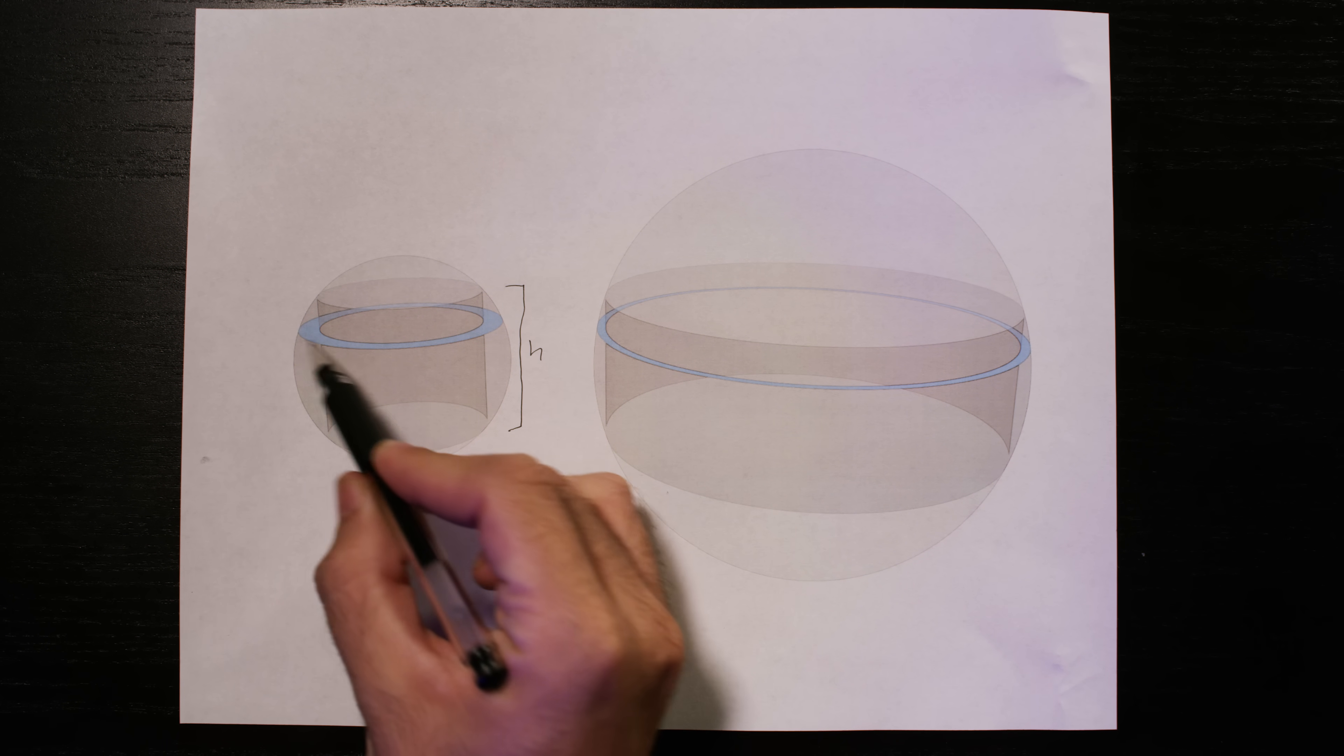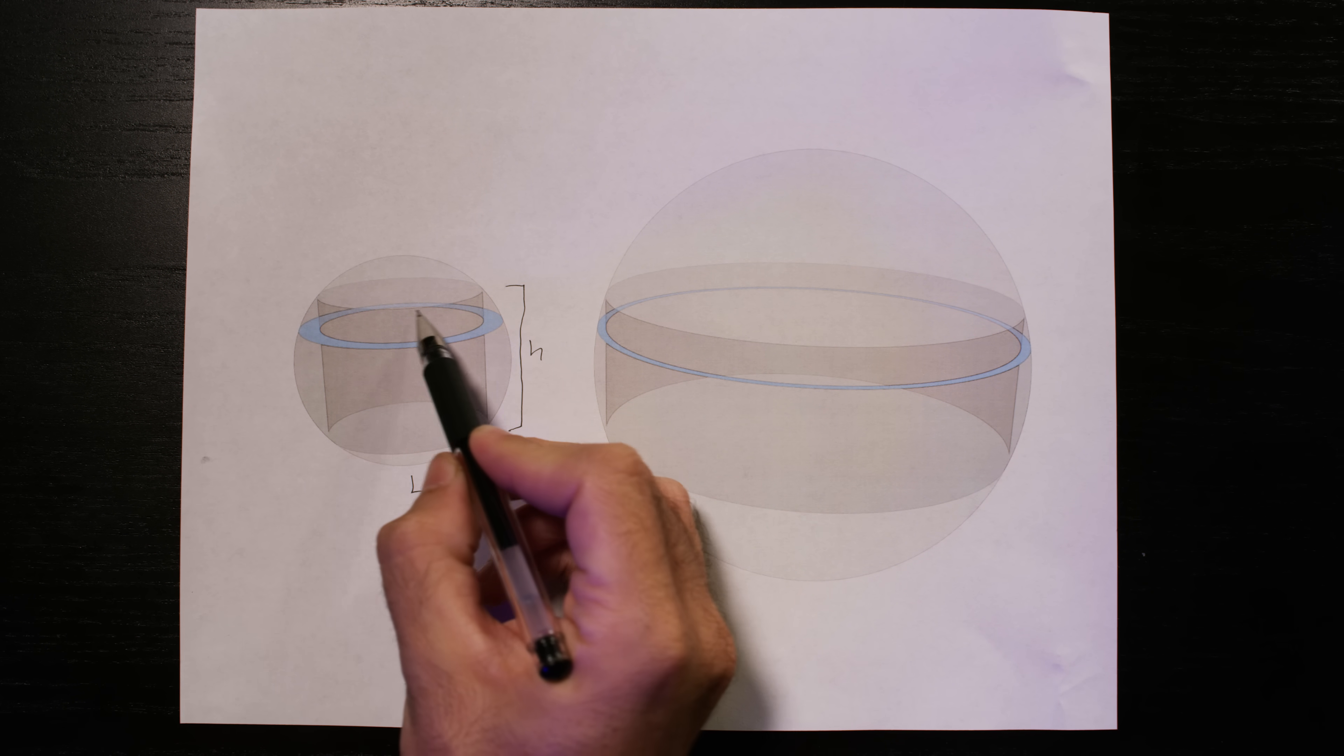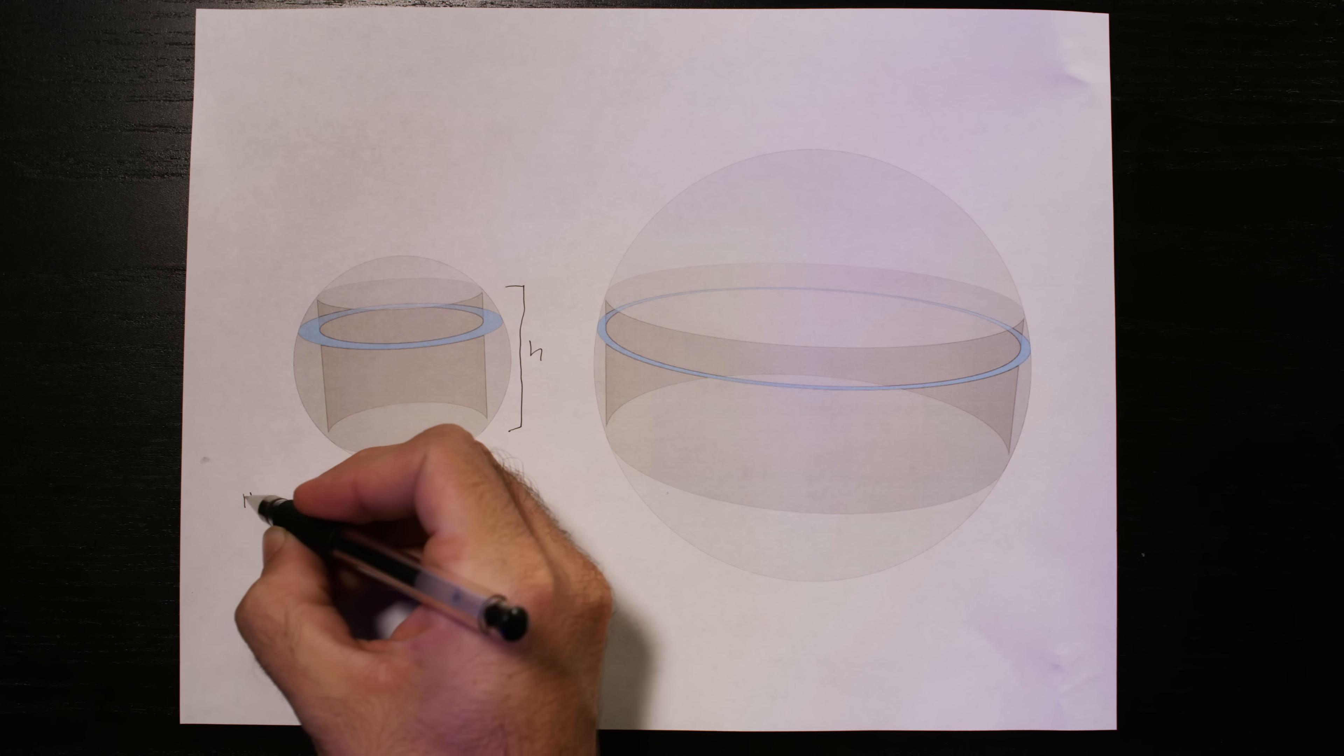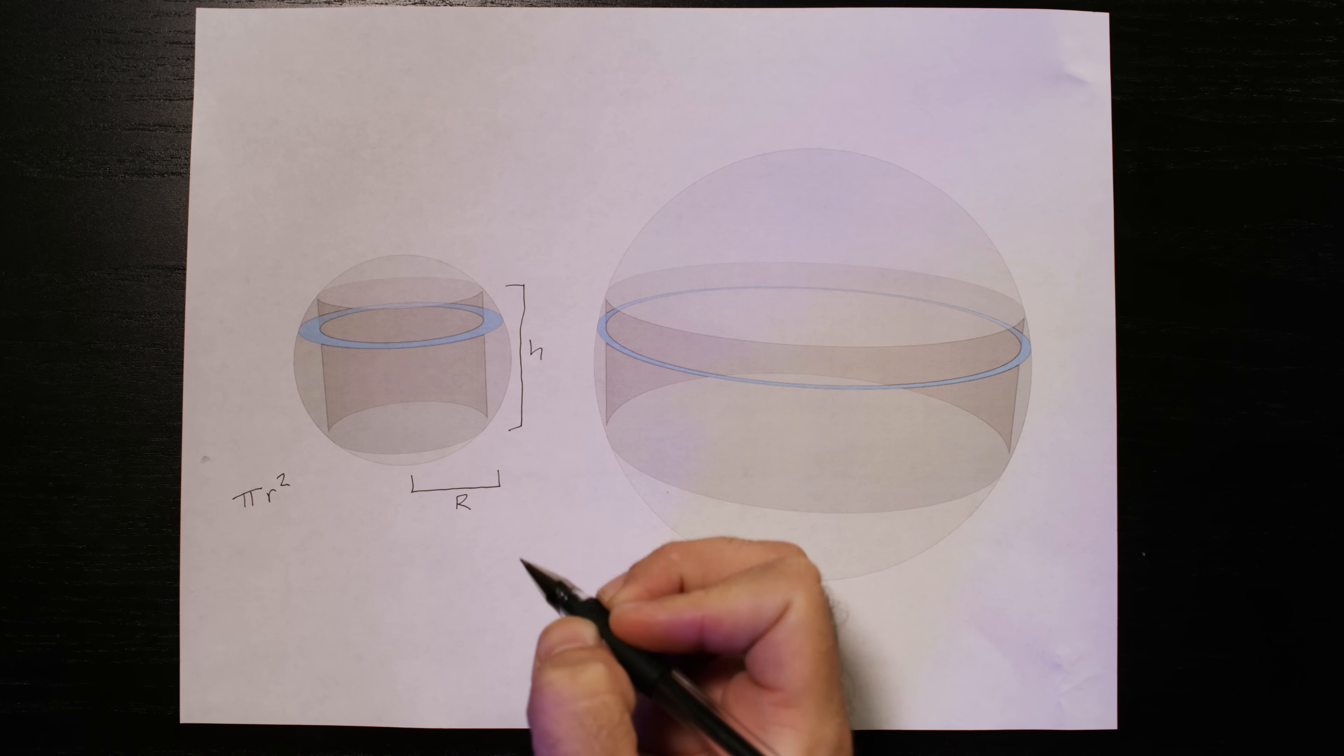Now, a cross section of a sphere, like this, and a cross section of a cylinder, like this, are both circles, so their areas can be determined by using pi times the radius squared.